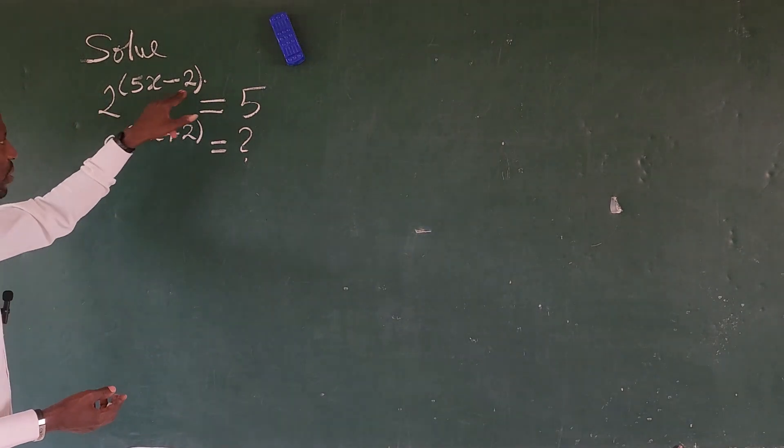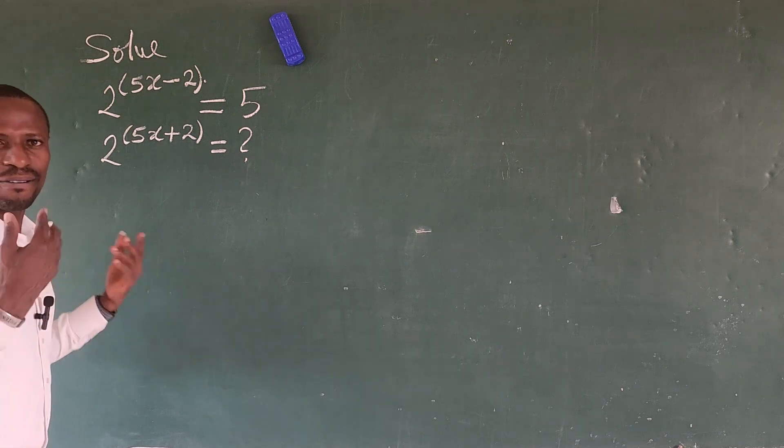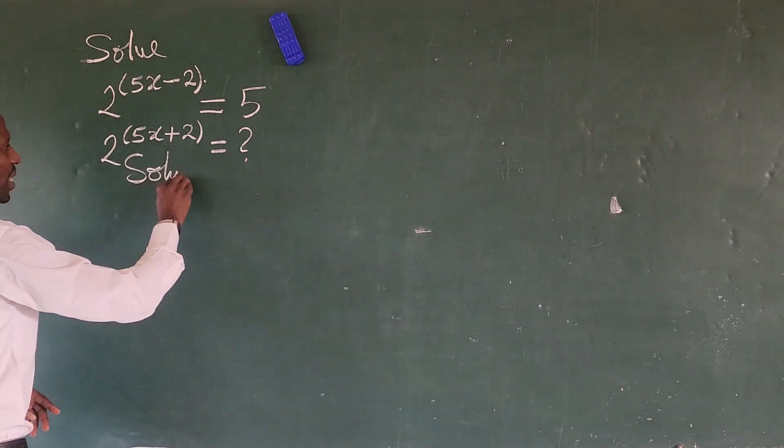So how do I add the plus 4 to this exponent? It is to multiply 2 raised to the power of 4. So from here, if we take our solution from here.